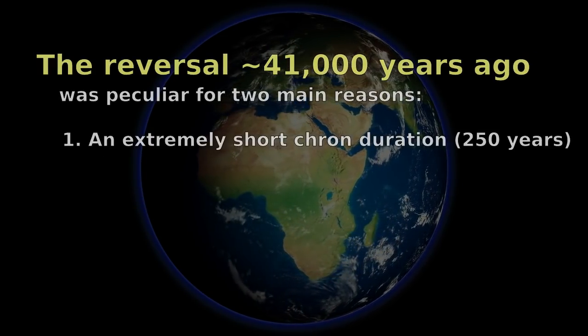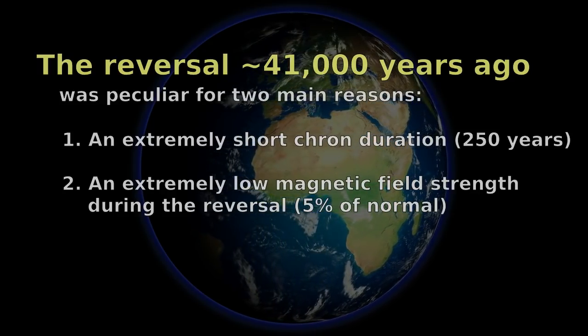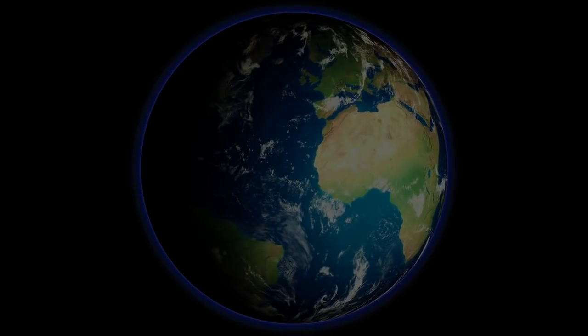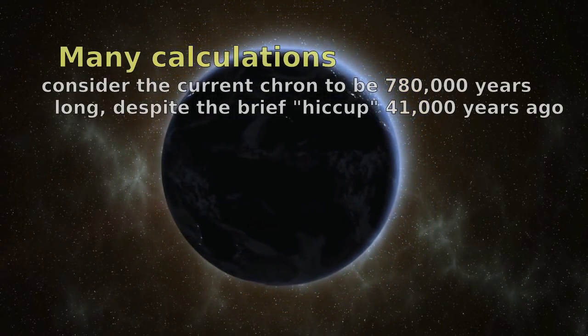The magnetic field reversed very briefly about 41,000 years ago, but the flip only lasted for about 250 years. Nobody's entirely sure if that resets the cron clock, and some equations don't even count that one. The last enduring flip happened 780,000 years ago. So, yeah, who knows?